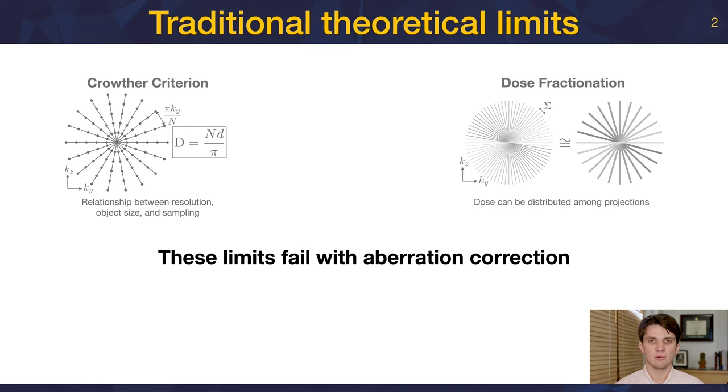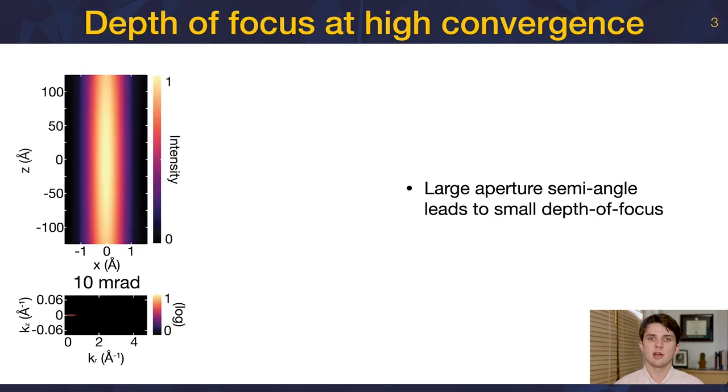But these limits fail with aberration correction. Both Crother and Hopp's arguments are dependent upon the projection-slice theorem, which requires a perfect projection in real space. Traditional tomography uses small aperture semi-angles to collect perfect projection images. On the left, we see a slice through the electron wave function calculated with a 10 milliradian aperture semi-angle. We see that this probe is broad in the imaging direction, which gives us a perfect projection. If we take the Fourier transform of the probe, we can see the shape and intensity of the contrast transfer function. Here we see that the CTF is planar, as expected.